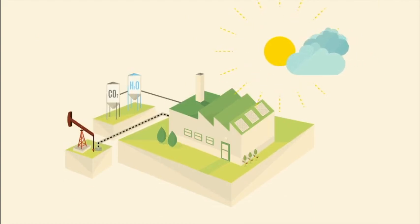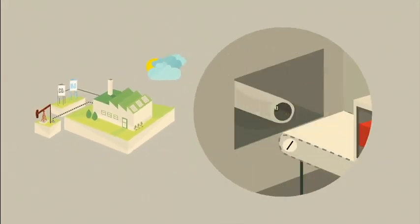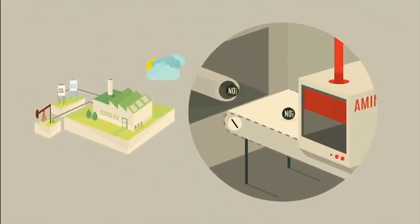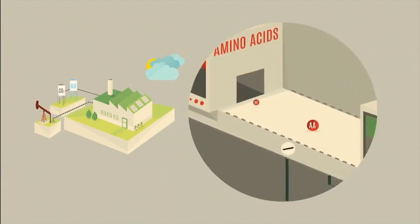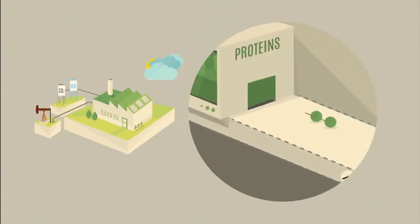But sometimes, unexpected events happen. The nitrates don't arrive to the leaves factory. The amino acids are drastically reduced. The factory is just ticking over.